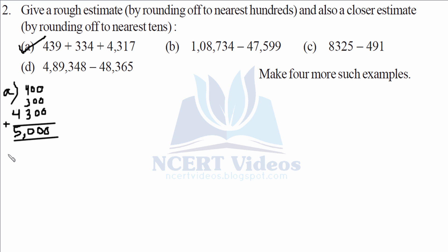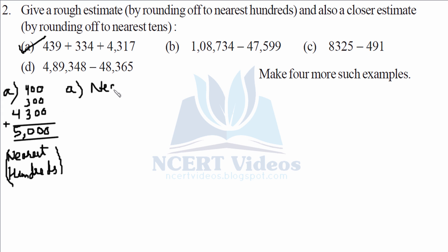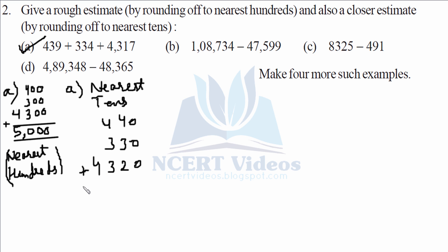The previous step was rounding to nearest hundreds. Now we are also asked to find the estimate in terms of nearest tens. For nearest tens: 439 is closer to 440, and 334 is closer to 330 because the digit is less than five, and 4317 rounds to 4320.